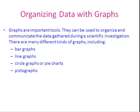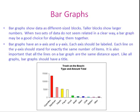Graphs are also really important tools. They can be used to organize and communicate the data gathered during a scientific investigation. There are many different kinds of graphs, including bar graphs, line graphs, circle graphs or pie charts, and pictographs. Bar graphs show data as different sized blocks. Taller blocks show larger numbers. When two sets of data do not seem related in a clear way, a bar graph may be a good choice for displaying them together.